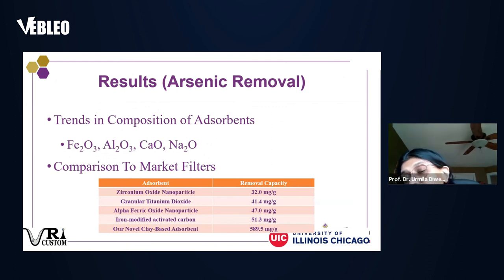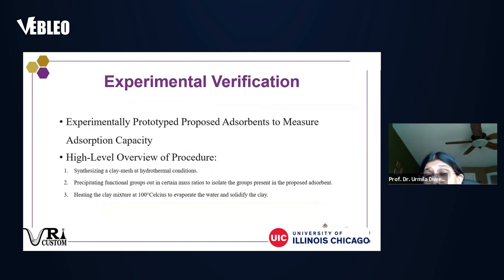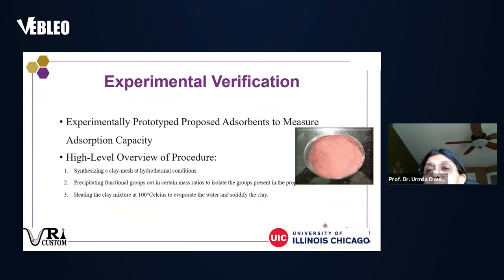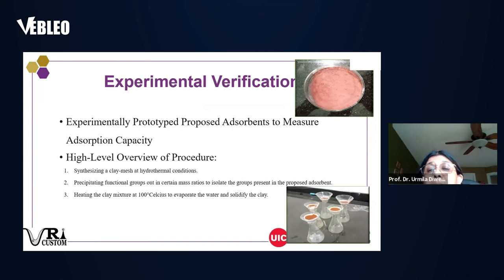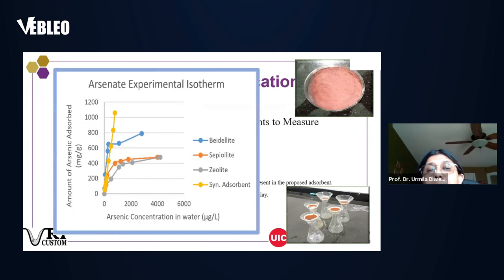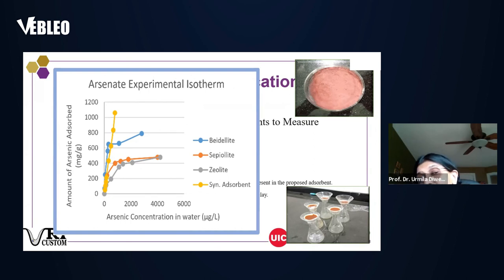The best designed adsorbent has an adsorption capacity of 589.5 mg/g — an order of magnitude higher than currently available adsorbents on the market. We designed experiments to validate: synthesizing a clay mesh under hydrothermal conditions, precipitating functional groups onto clay, evaporating water and solidifying. The synthetic adsorbent removes arsenic to a far greater extent than the three existing adsorbents, confirmed experimentally.